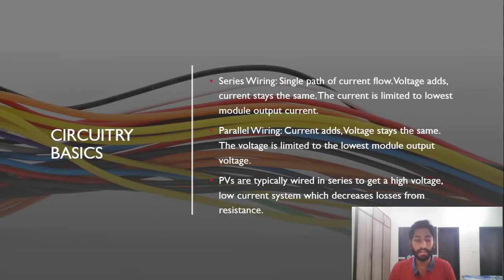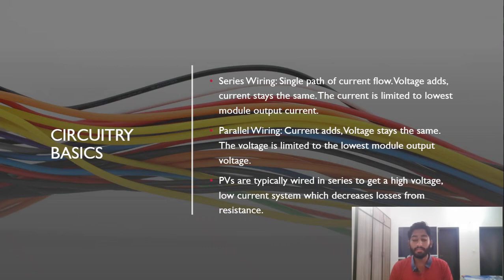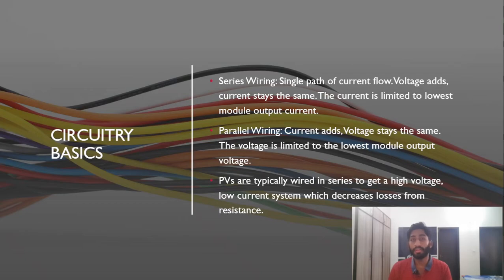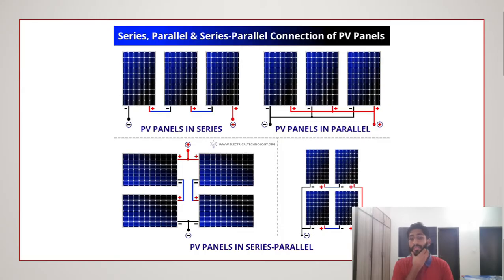For series connections, there is a single path of current flow. In that single path, voltages add up and the current stays the same. If you have three or four modules connected in series, the total current will be the same as the lowest module output current — this is the key distinction between series and parallel connections.